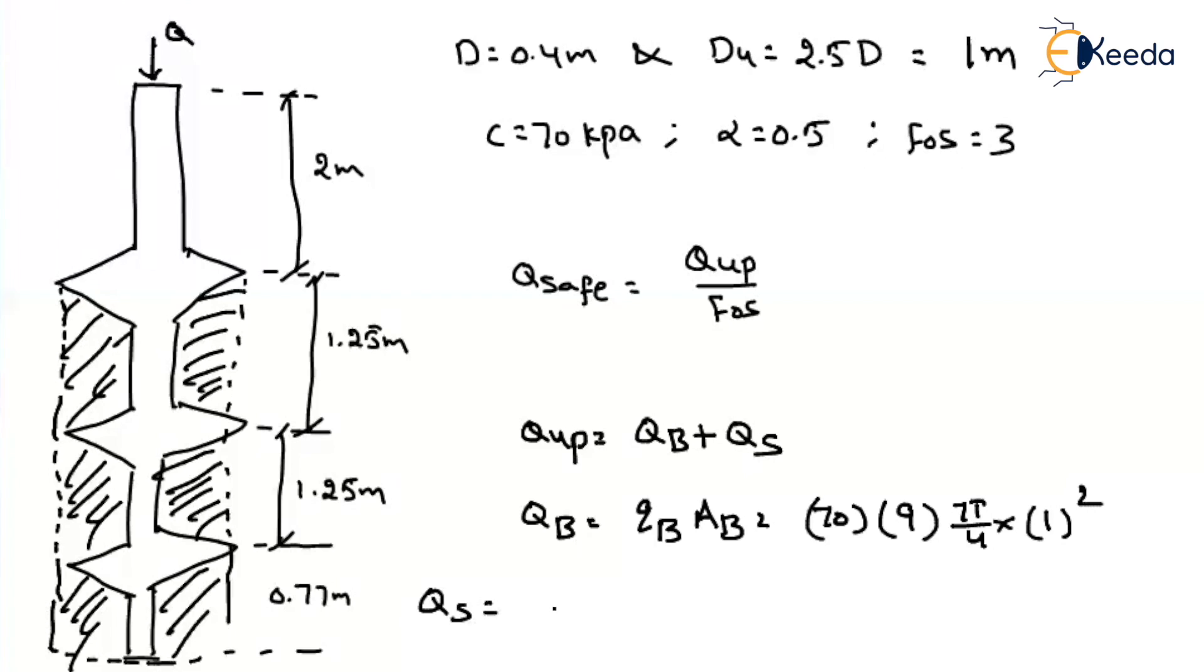What about the frictional resistance? So this can be summed up in 2 ways, Q_s1 plus Q_s2. In the first 2 meter part, we are having contact with the soil and the pipe. But the remaining we are in contact with the soil and soil. So up to the 2 meter, we have to consider our adhesion factor as 0.5. After 2 meter, we have to consider adhesion factor as 1.